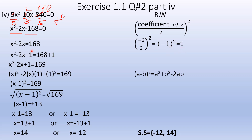Minus 1 whole square is equal to 1. Add this to both sides. The x coefficient divided by 2, divided by 2 is minus 1, and minus 1 whole square equals 1. The right-hand side becomes equal to 8. The left-hand side is now a complete square.